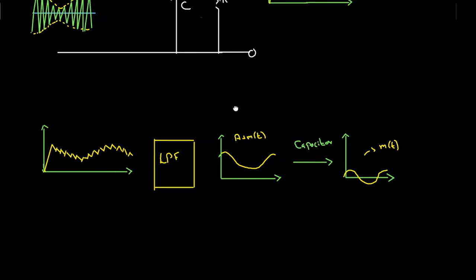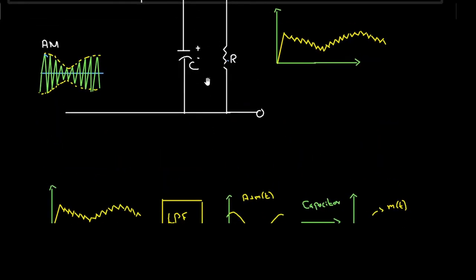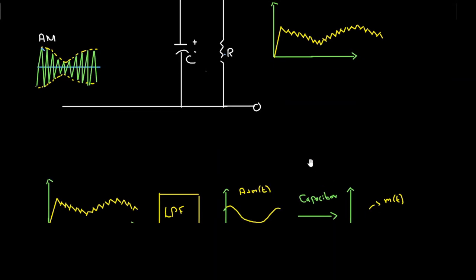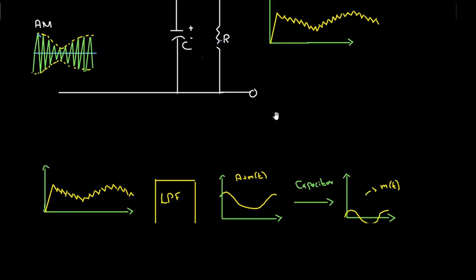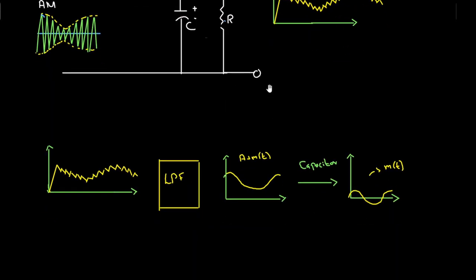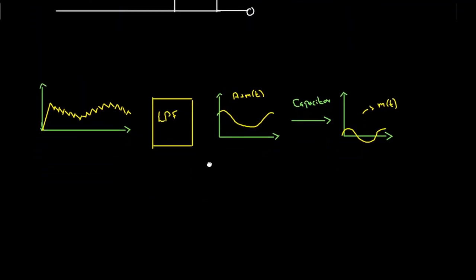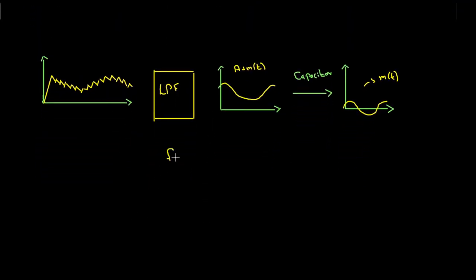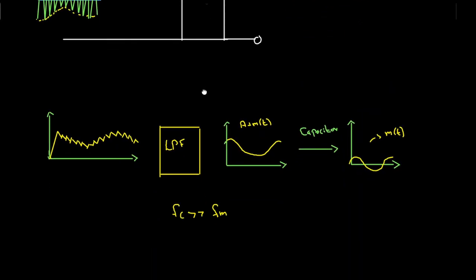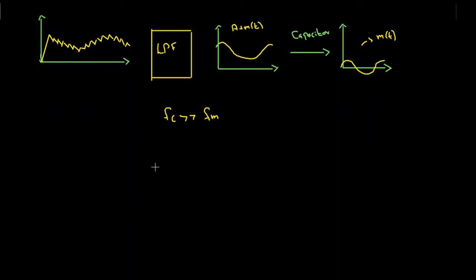This is the method and circuit of the envelope detector, and in this way using envelope detection we have recovered the message signal from the amplitude modulated signal. Note that the amplitude modulated signal works perfectly when the carrier frequency is very much greater than the message frequency. The values of R and C should be selected carefully such that 1/(ω_C) << RC << 1/(2πB), where B is the bandwidth of the message signal.